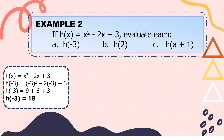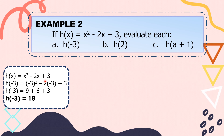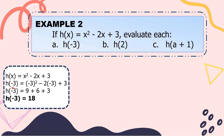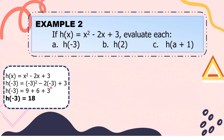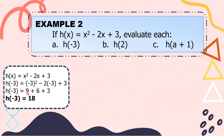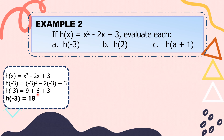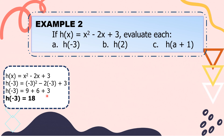For letter A, our function is h of x equals x squared minus 2x plus 3. We replace all x with negative 3. h of negative 3 equals negative 3 squared minus 2 times negative 3 plus 3. Negative 3 squared is positive 9. Negative 2 times negative 3 is positive 6. So, 9 plus 6 plus 3 equals 18. Thus, h of negative 3 is equal to 18.